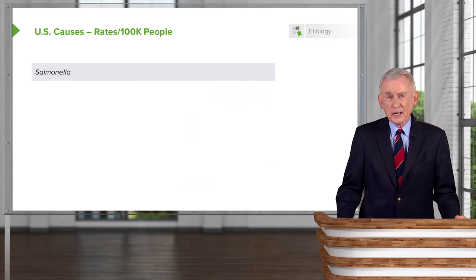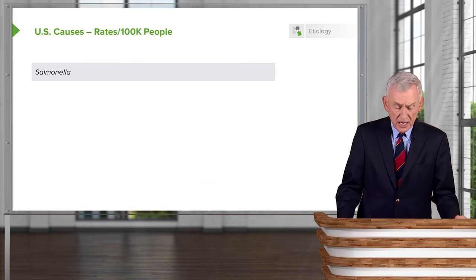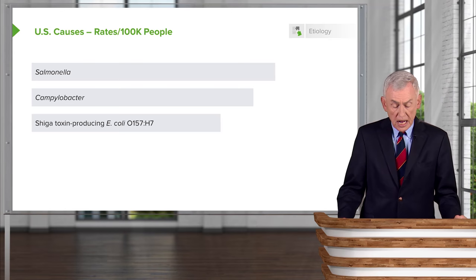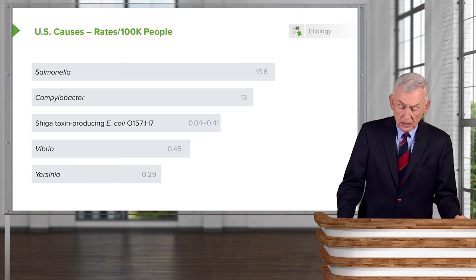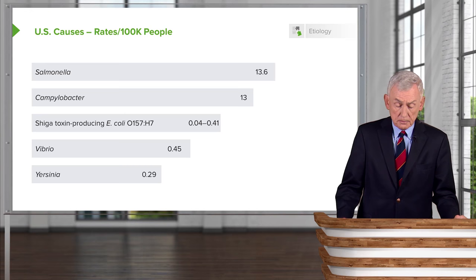In terms of organisms per 100,000 population, Salmonella leads the list, followed by Campylobacter, Shiga toxin-producing E. coli, Vibrio, and Yersinia. So Salmonella is quite a big problem in the United States — more about that later.